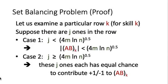To prove the theorem, let us first examine a particular row K of A, which corresponds to skill K. Suppose there are J ones in that row. If J is less than the magic number √(4M log N), then no matter how you partition, the difference related to that row can never exceed J — and the worst case is putting all J students with that skill in one group. So case 1, when J is small, is actually a good case: no matter how you partition, you won't look bad.